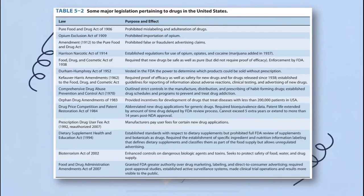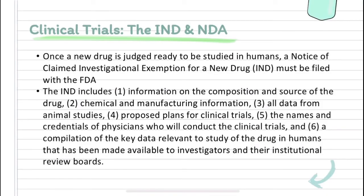There are major legislations pertaining to drugs in the United States, as shown in the table. Regarding clinical trials and the IND: once a new drug is judged ready to be studied in humans, a notice of claimed investigational exemption for a new drug, or IND, must be filed with the FDA. The IND includes information on the composition and source of the drug, chemical and manufacturing information, all data from animal studies, proposed plans for clinical trials, the names and credentials of the physicians who will conduct the clinical trials, and a compilation of key data relevant to studying the drug in humans made available to investigators and their institutional review boards.